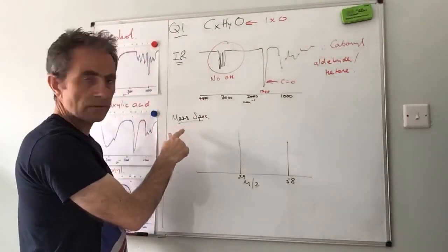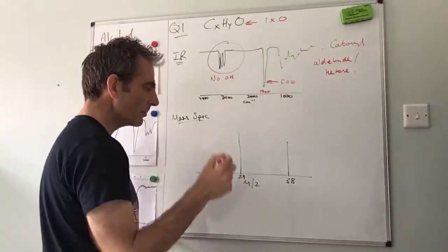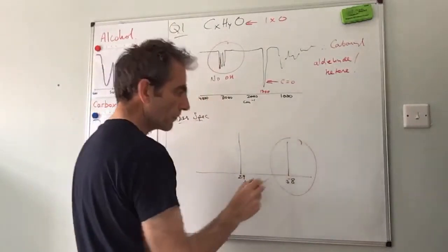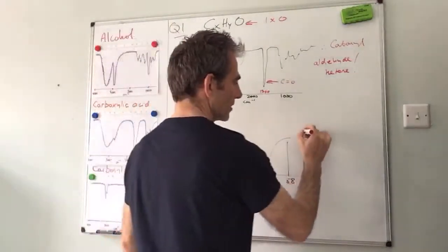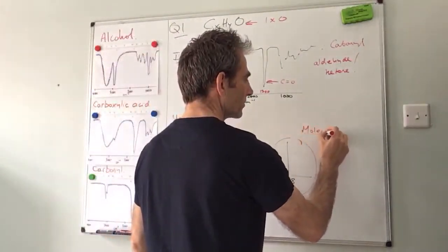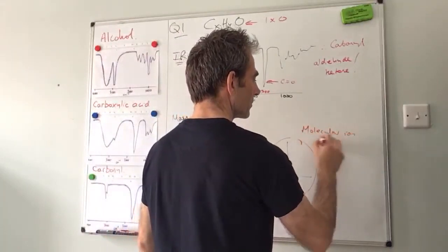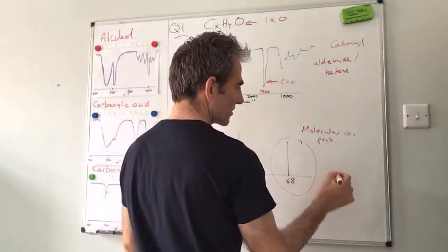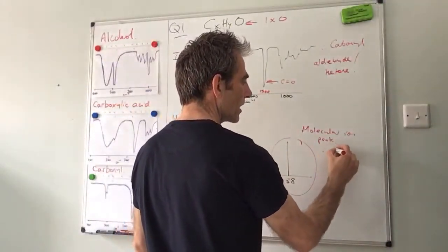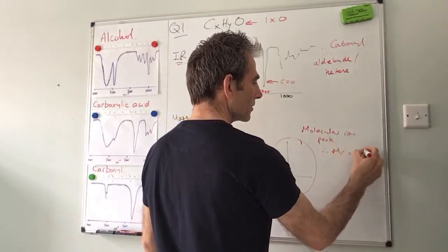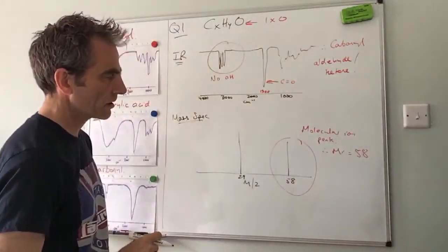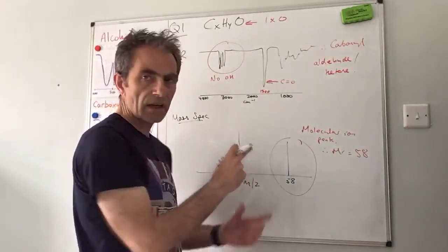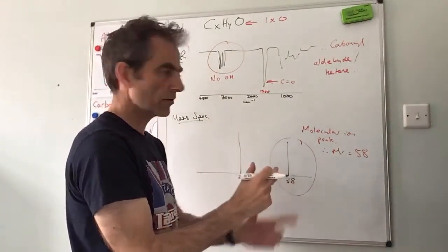So we move on to the mass spectrum now. Remember there's one peak you must look at straight away and it's this one here, the one furthest to the right - molecular ion peak. And it's at 58, so therefore the MR is 58.